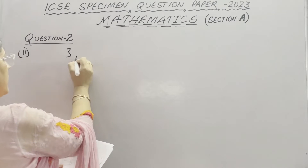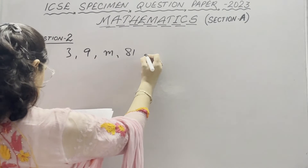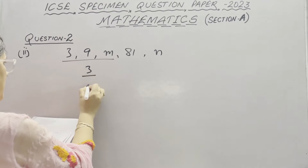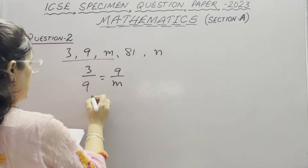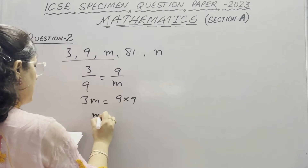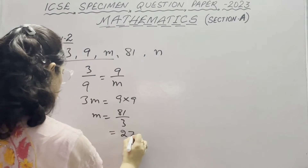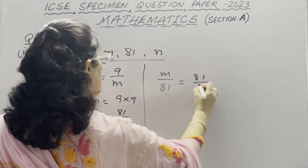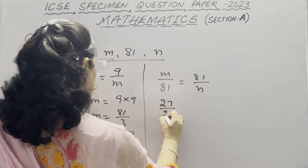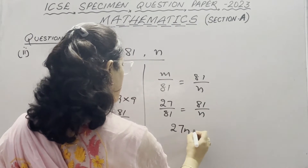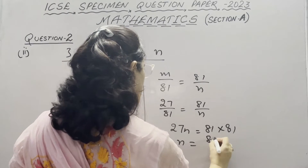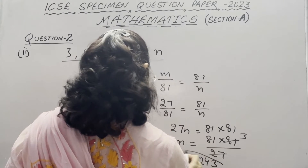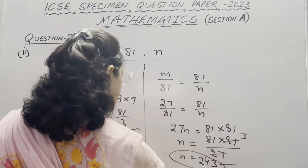In Part 2 of Question 2, the numbers 3, 9, M, 81 and N are in continuous proportion. For three numbers in continuous proportion: 3/9 equals 9/M, so cross multiplying gives 3M equals 81, meaning M equals 27. Then using M/81 equals 81/N: 27/81 equals 81/N, so 27N equals 81 times 81 equals 6561, giving N equals 243. So M equals 27 and N equals 243.